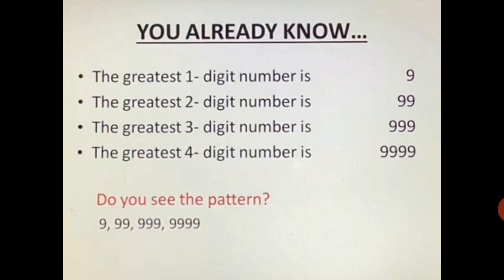You already know the greatest one digit number is 9. The greatest two digit number is 99. The greatest three digit number is 999. The greatest four digit number is 9999. Do you see any pattern here? Yes, we can see a pattern. In the first we have only one 9, then 2 nines, then 3, then 4, and so on. This pattern will move like this.